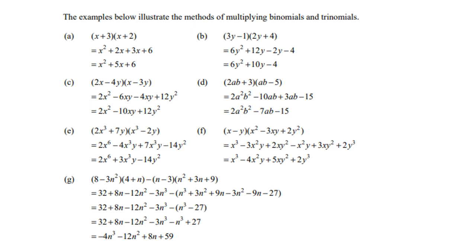Look at E. 2X cubed times X cubed is 2X to the power of 6. 2X cubed times minus 2Y is minus 4X cubed Y. 7Y times X cubed is 7X cubed Y. 7Y times negative 2Y is negative 14Y squared. Again, collect the two like terms. Negative 4 and 7 is positive 3X cubed Y.